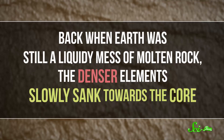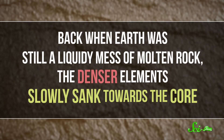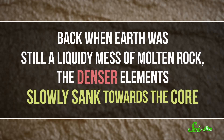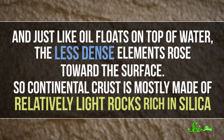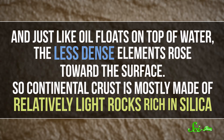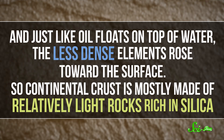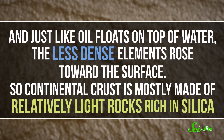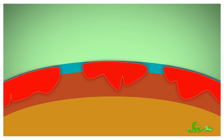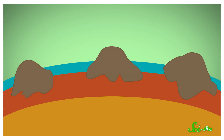And that means that certain chunks of every continent go back as much as three billion years or more. These super-stable continental chunks are called cratons. They're made of tough, floaty rock that often hasn't been melted by plate tectonics for three billion years or so. The youngest ones clock in around half a billion. Back when the Earth was still a liquidy mess of molten rock, the denser elements slowly sank toward the core, and just like oil floats on top of water, the less dense elements rose toward the surface, so continental crust is mostly made of relatively light rocks rich in silica. As these light rocks started to cool and condense, they would have bobbed like a cork on the surface of the planet.